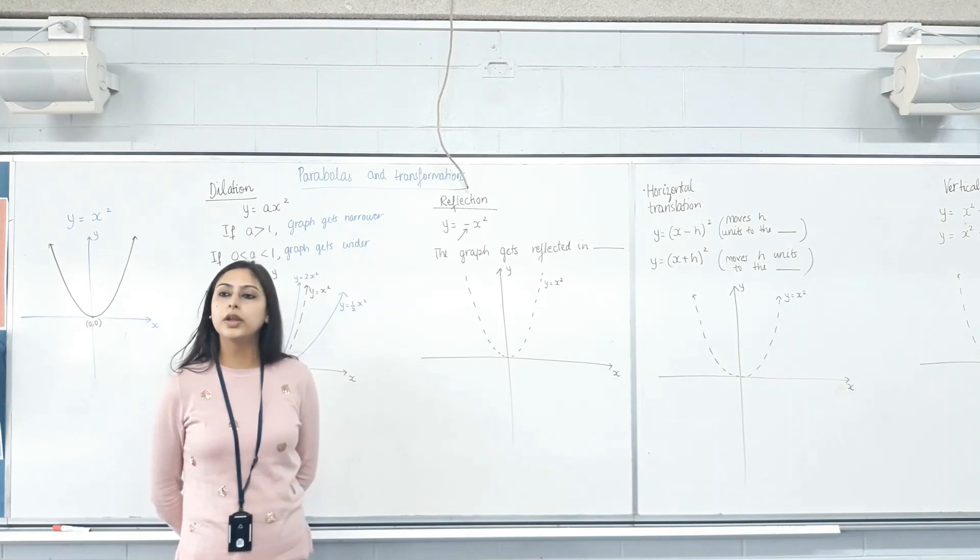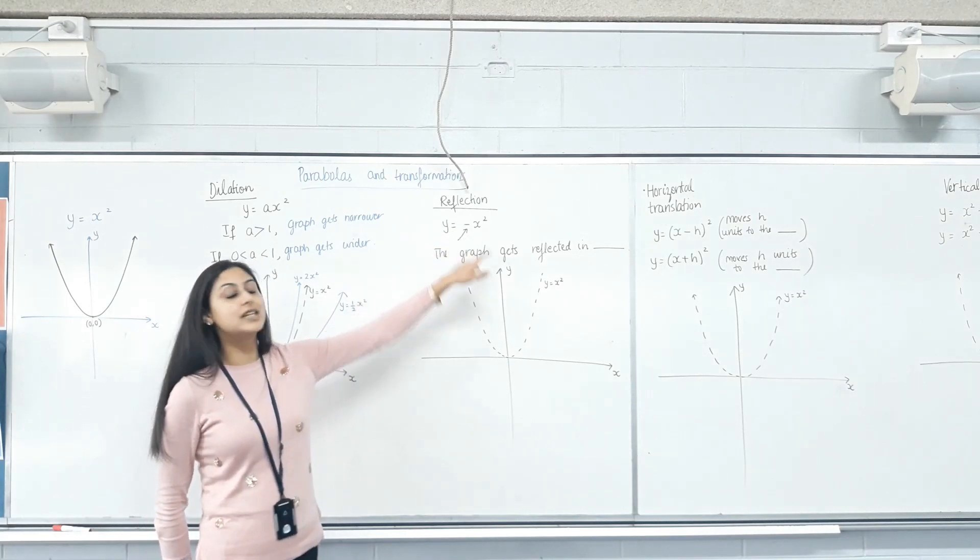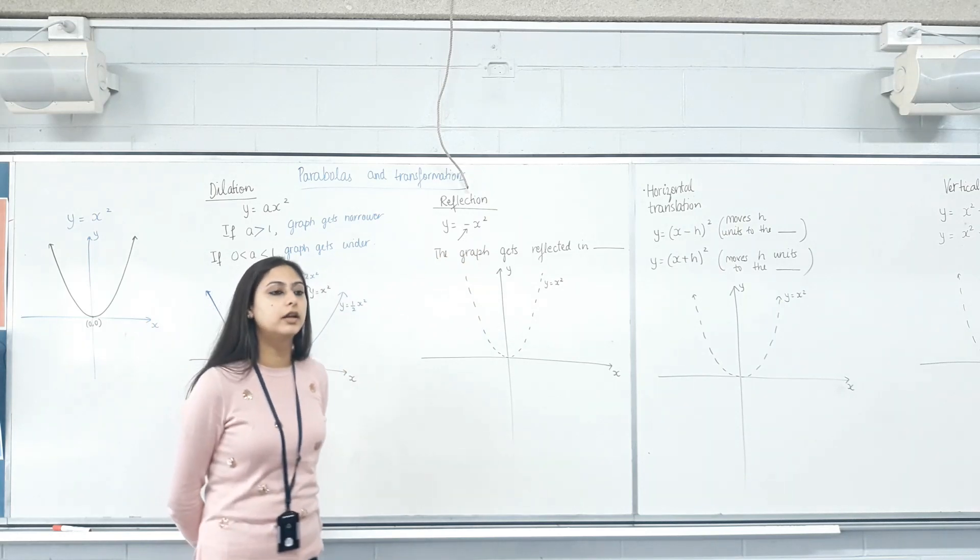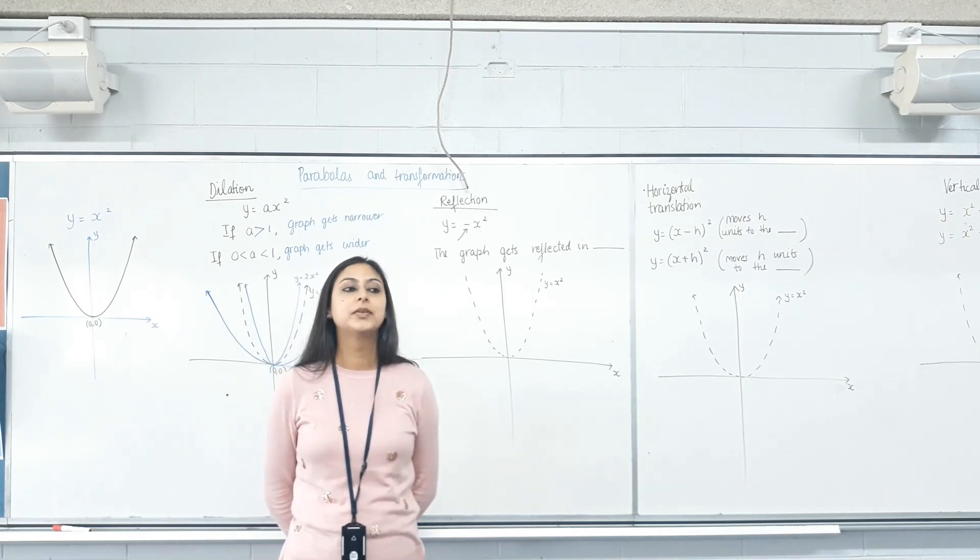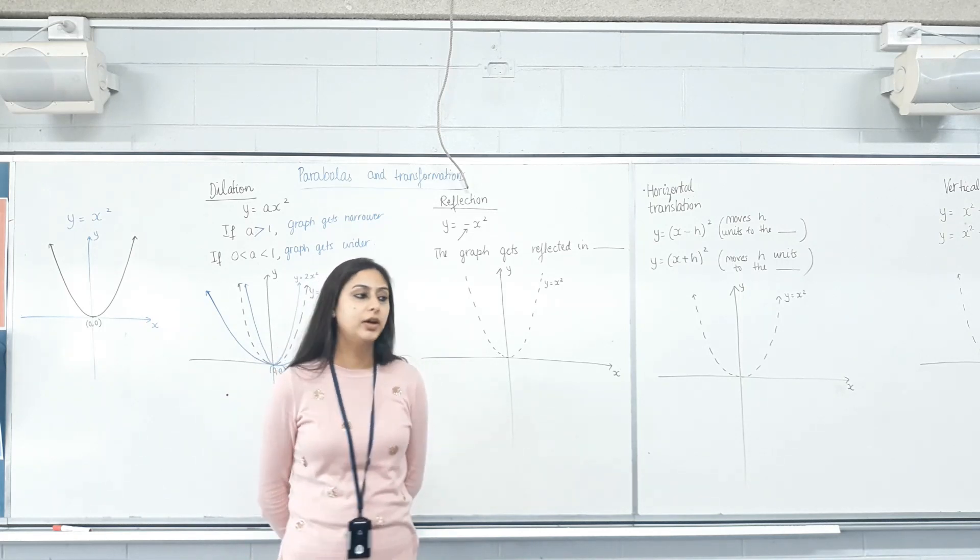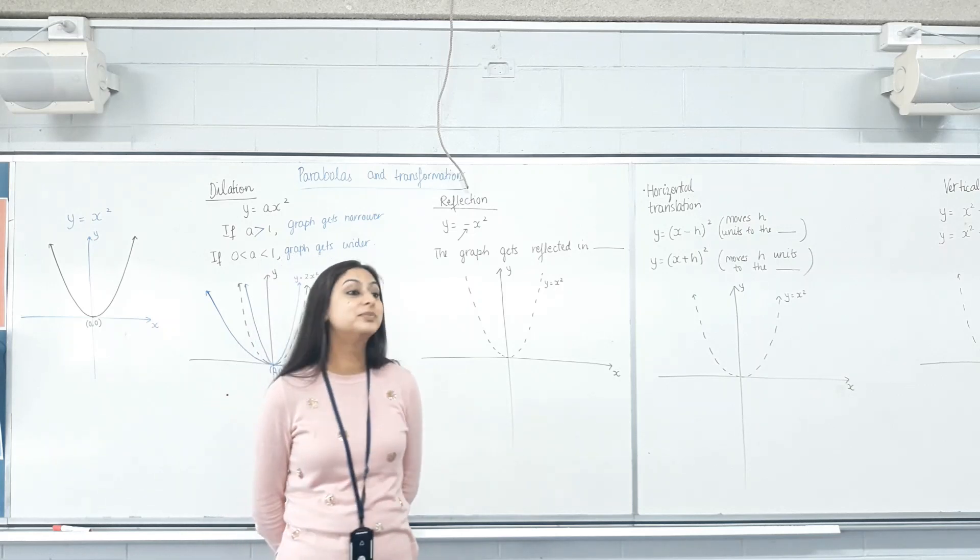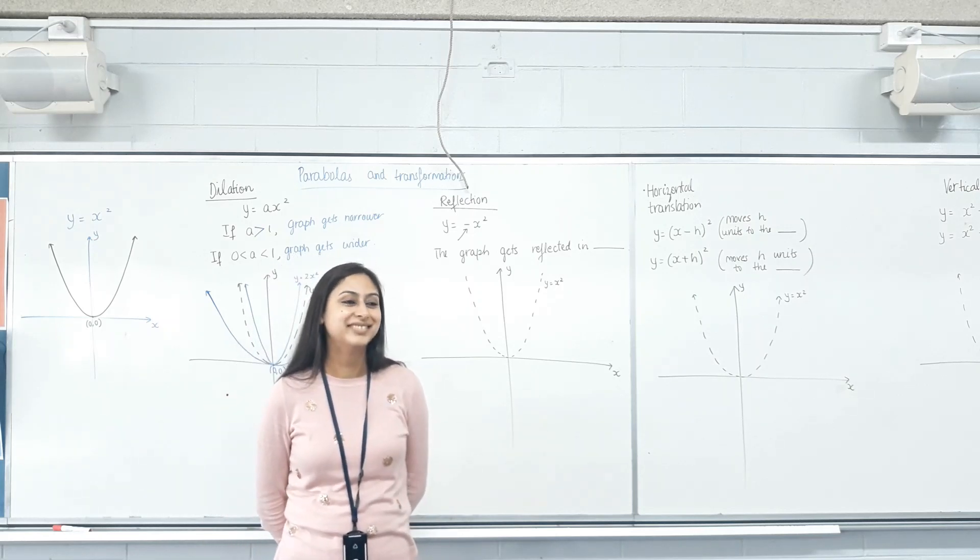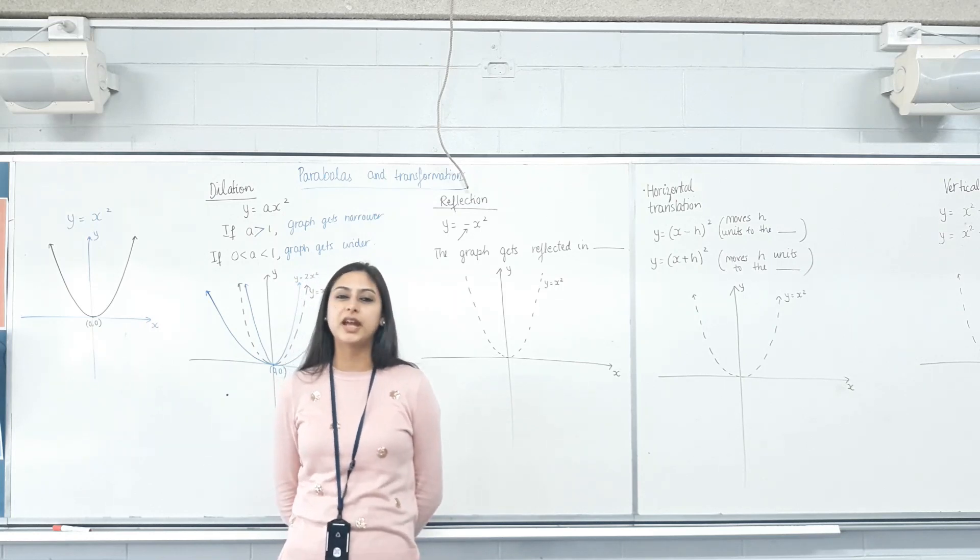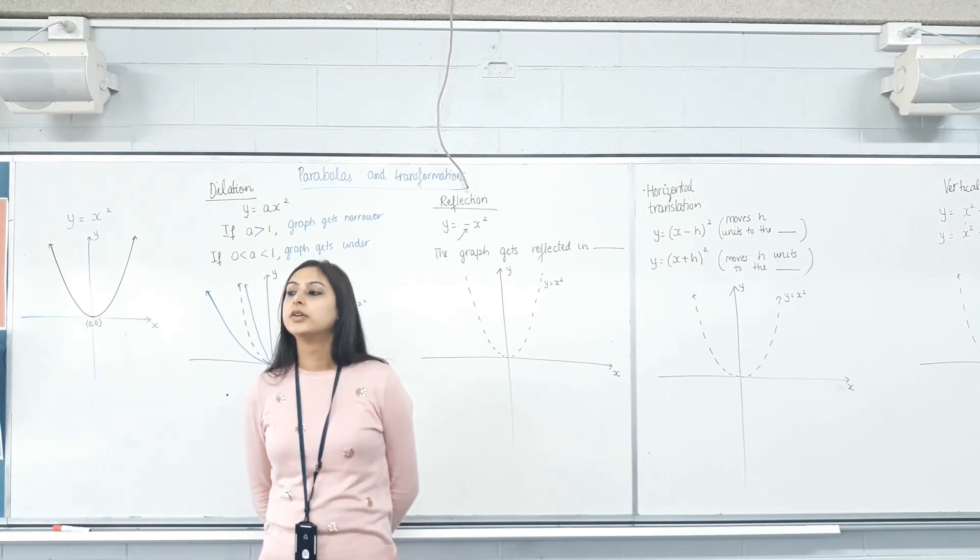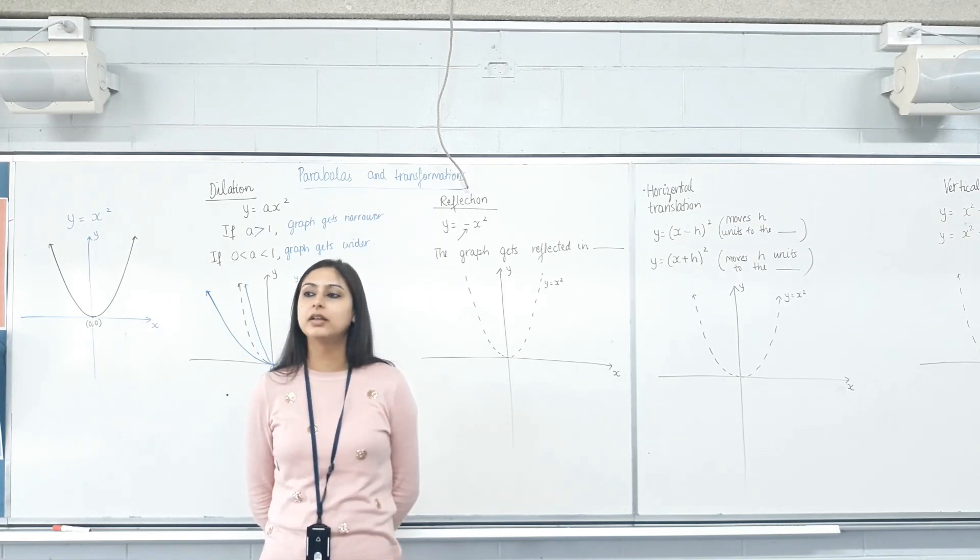Now, we are going to multiply it with a negative number. So I want you to sketch y equals negative x squared. Now. And then I want you to describe to me what happens. The other way. Down. Prices are down. What happened? Can someone explain to me what happens? Going down doesn't really make sense. Symmetrical at the bottom. Symmetrical at the bottom, okay. Yes. Went negative, okay.